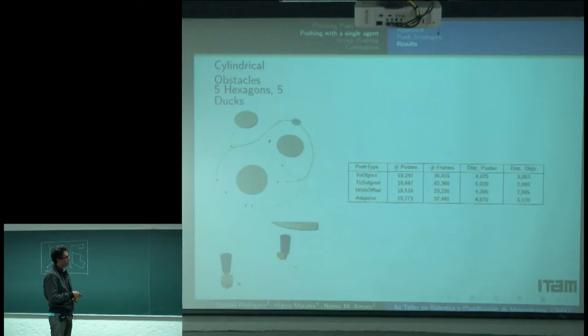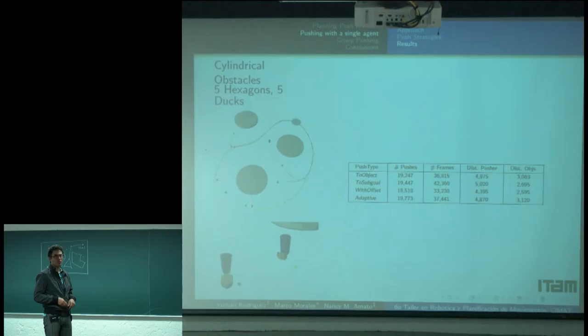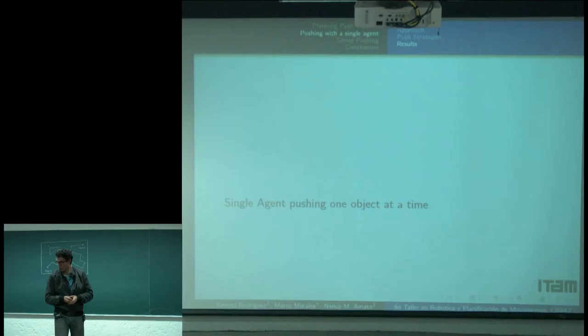Here is a different environment with cylindrical obstacles. The objects include a duck model and a hexagon. We see similar results across object types, confirming that these simple strategies can be applied to this problem.